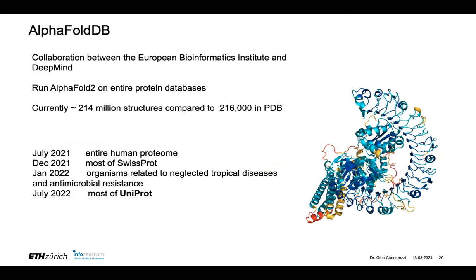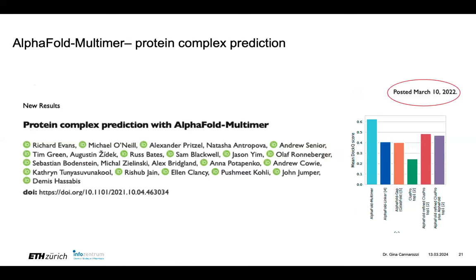Since that time, a couple of developments have happened. One is AlphaFold DB, a collaboration between the European Bioinformatics Institute and DeepMind. They ran AlphaFold on all protein structures available in UniProt, and in July 2022, released a version of AlphaFold DB containing all structures in this non-redundant database. So now if your protein sequence is in a public database, it probably already has a structure prediction. The focus is shifting to protein complexes and protein-protein interactions, and in 2022 they released AlphaFold multimer. There's also RoseTTAFold, which is performing extremely well using similar methods.